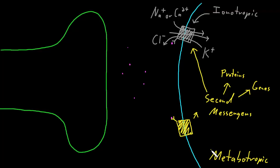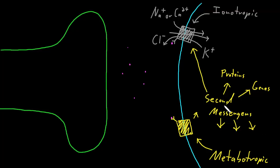When metabotropic neurotransmitter receptors are activated, the response of the target cell occurs more slowly than with activation of ionotropic neurotransmitter receptors. But the effects may be larger and more widespread because there can be amplification through these second messenger systems. The effects may involve just brief excitation or inhibition of the target cell, or they may cause longer lasting changes to how the target cell behaves — either when it's at rest or when it's responding to the input.